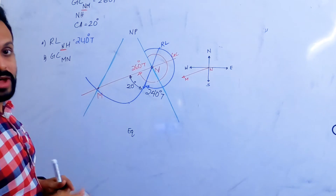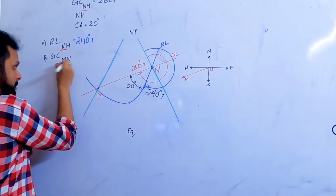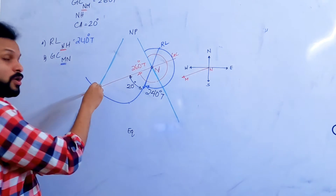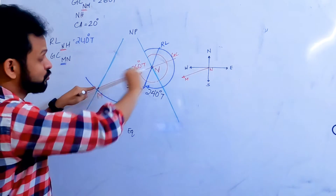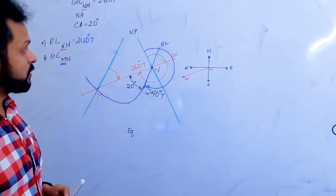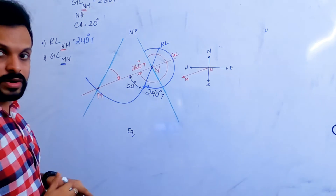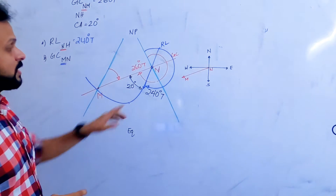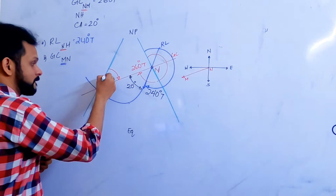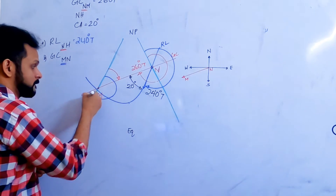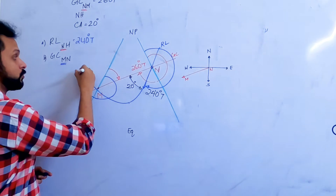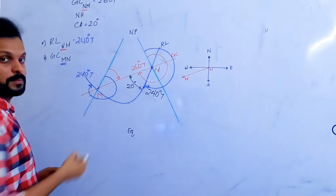We are now asked to find the great circle track from M to N. Now the focus is on M. One approach: since we have the rhumb line track from N to M, we can use the property of rhumb lines. The rhumb line track at M in the direction toward N is also 240 degrees. We then subtract 180 degrees — 240 minus 180 = 60 degrees — giving the rhumb line track from M to N as 60 degrees. That is why it is called a rhumb line — its track value is consistent.